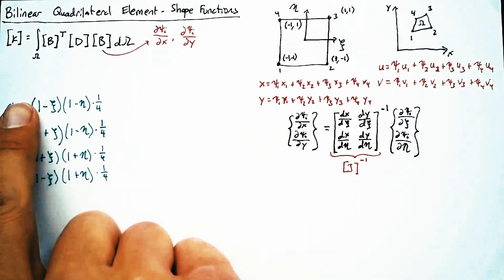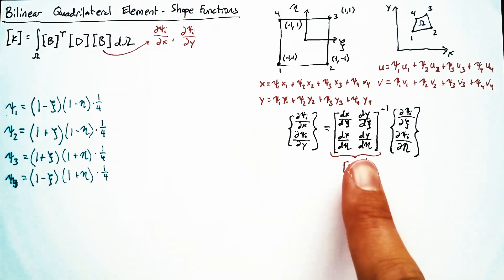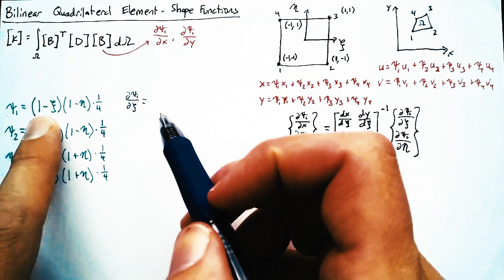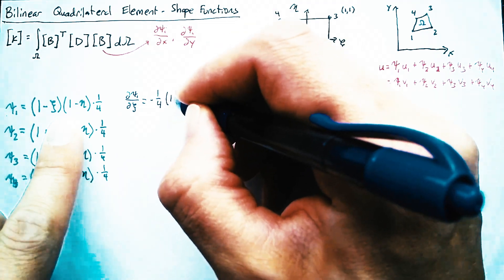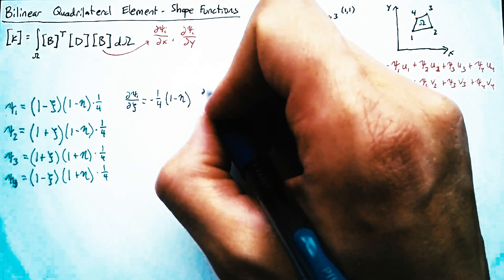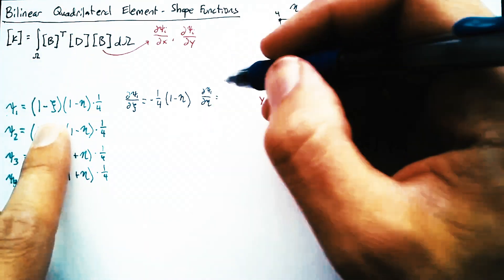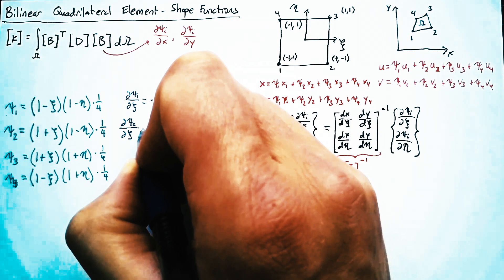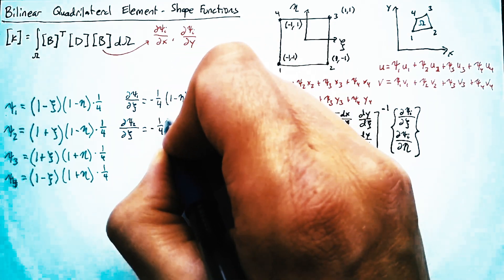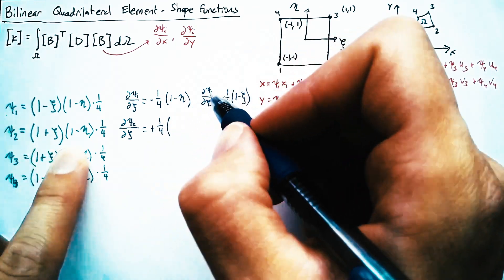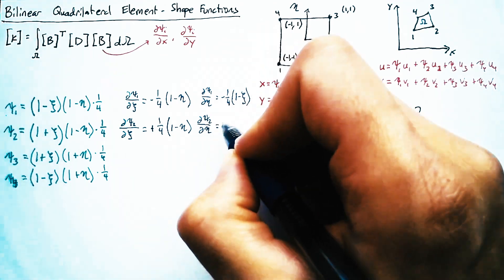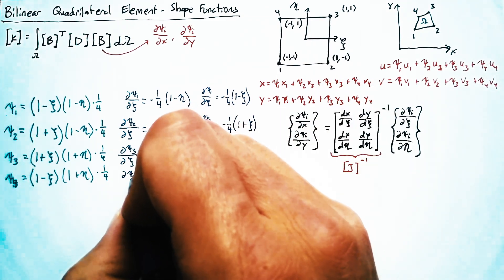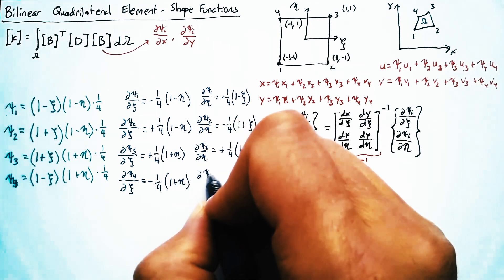Now, in order to calculate these, we need to take the derivatives of psi with respect to xi and eta. So let's do that really quick. So for psi 1, the derivative with respect to xi is just going to be a negative 1 fourth 1 minus eta. The derivative with respect to eta is going to be a negative 1 fourth 1 minus xi. And then this pattern stays pretty similar for our other three shape functions. So for psi 2, the derivative with respect to xi is positive. And the derivative with respect to eta is still negative. For psi 3, they're both positive. And then for psi 4, only the d xi derivative is negative.